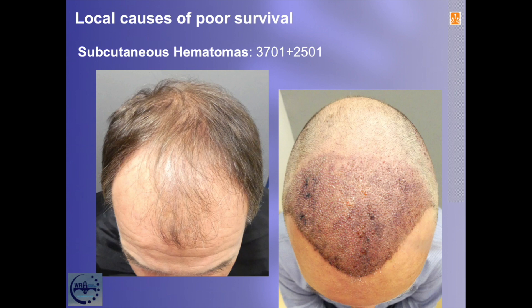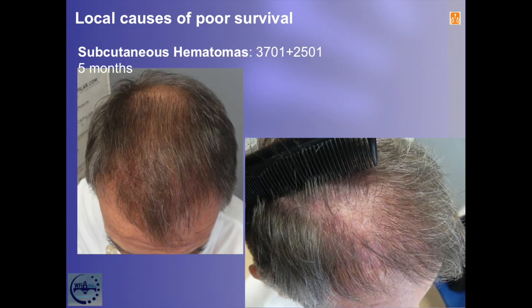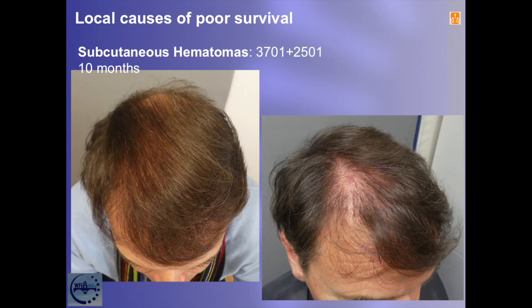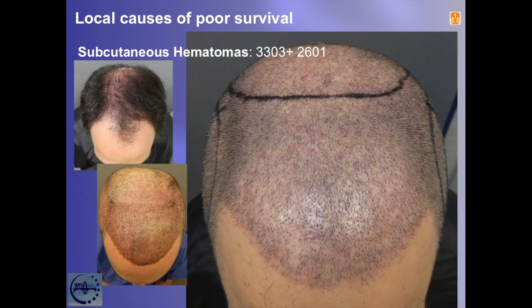Let's look at some cases. Frontal restoration, 3,700 units, very fair skin. In the immediate post-op we can clearly see various hematomas on the right side — there is no fibrosis nor crust — but at five months post-op the fault is already apparent. At 10 months there is good general coverage that however does not hide the faulty survival. With hair shaved we can observe how the spots where hair is missing coincide with the hematomas seen in the immediate post-op. On the second surgery the defect was repaired with a good final result.